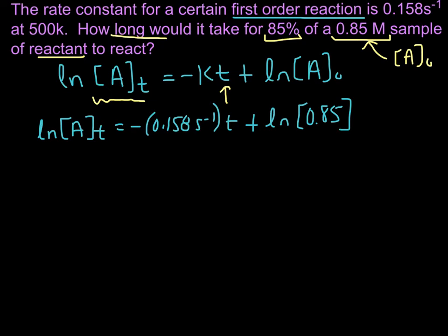How do we get this concentration we're looking for? We want the time for 85% of it to go away, so that means 15% will remain. 85% reacts, 15% remains. That's important because that's what we'll put in for the concentration of A at some time.